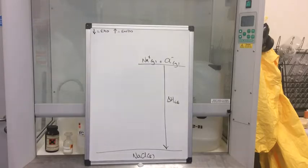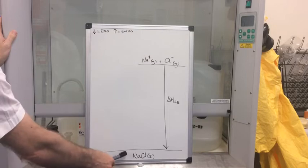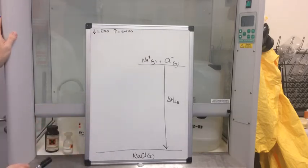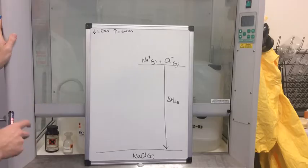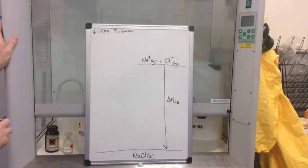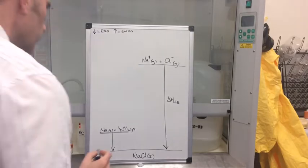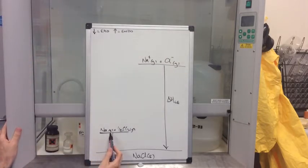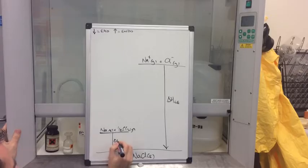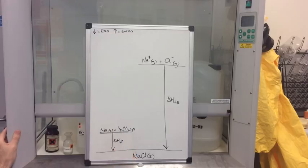We need to create a cycle — in other words, find another way of getting from here back to here, and that's going to involve quite a few different enthalpy changes. At AS you're familiar with small enthalpy cycles using enthalpies of combustion or formation. This Born-Haber cycle applies the same principle but uses more enthalpy changes. The alternative route starts with Na(s) + ½Cl₂(g) going to one mole of sodium chloride — this is the enthalpy change of formation, because we're forming one mole of a substance from its constituent elements in their standard states.